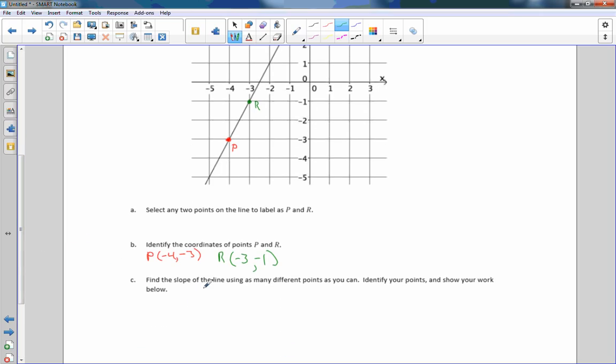Part C says find the slope of the line using as many different points as you can. Identify your points and show your work below. So in order to find slope, I will say M equals rise over run. But in this case, we don't want to just count up and over. We're using our points. So we're moving on to a different concept. And if we are given values like so, we don't need a graph to determine what the slope of the line is. If we have two points, we can find the slope by calculating.